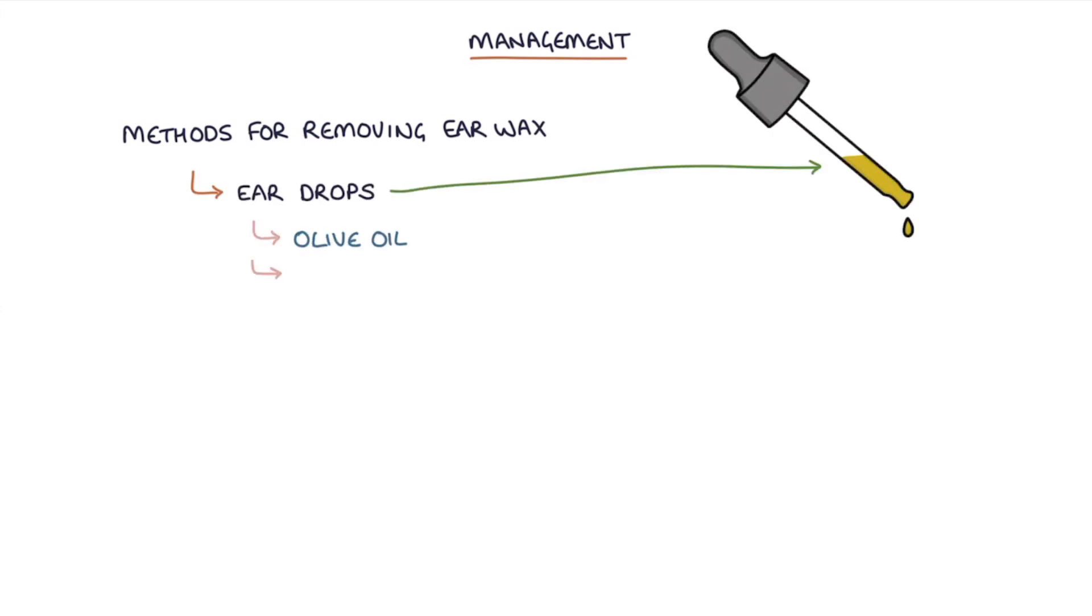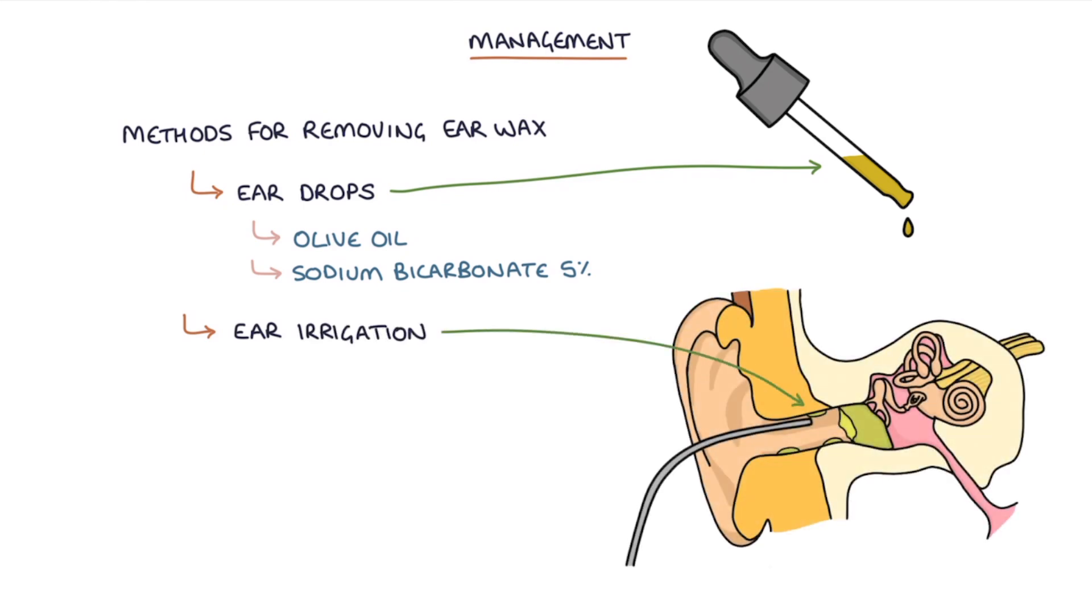There are three main methods for removing earwax. The first is ear drops, usually with olive oil or sodium bicarbonate 5%. The second option is ear irrigation and this involves squirting water into the ear in a controlled environment in order to clean away the wax. And the third is micro suction, which is where a tiny suction device is used to suck out the wax.